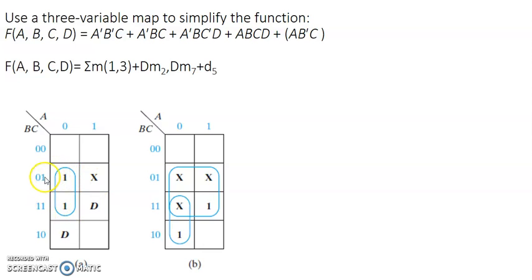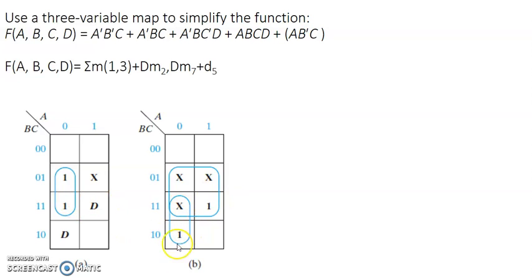Do the pairing of ones: the result is ā·c. Then convert to don't cares and make only d equal to 1. These four in one group give result c, and this pairing gives ā·b. Combine both results. The final result is: ā·c + ā·c + c + ā·b.